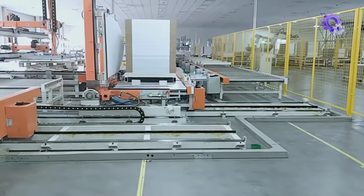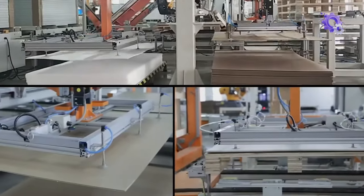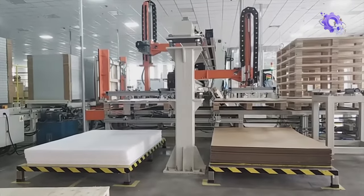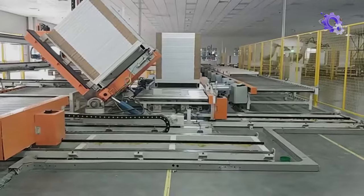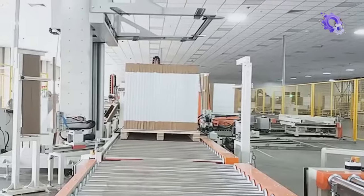Once testing and quality control are completed, packaging materials are carefully selected to provide adequate protection during transportation and storage. Solar panels are typically shipped in pallets or containers with appropriate labeling and documentation to facilitate handling and installation.